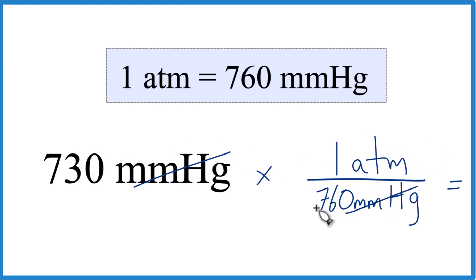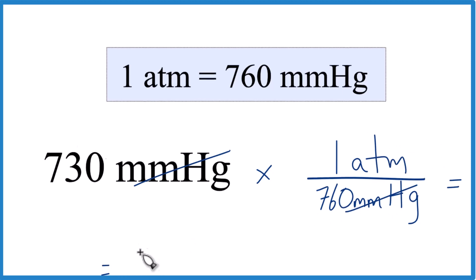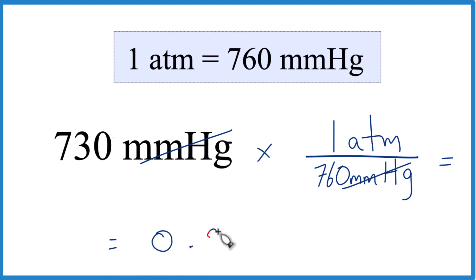So 730 divided by 760, that equals 0.9605. So let's call it 0.961. Our units, that'll be the atmospheres.